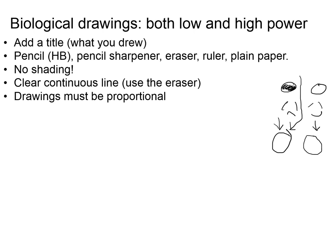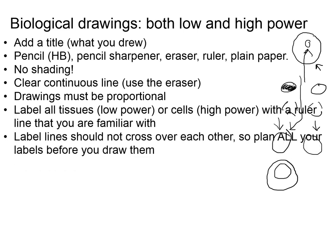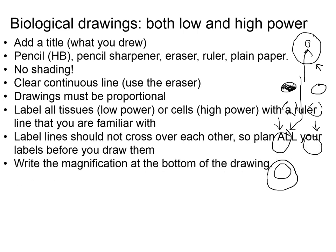Drawings must be proportional. For example, if the nucleus in the real cell is a certain size, don't draw it really big in your drawing — that's not proportional. It needs to be about the same relative size. Label all the tissues or cells you can, using a ruler line — meaning a straight line. If you can't identify something, don't label it. I'm not asking you to look up things I haven't told you about. Label lines should not cross each other — that's just neatness.